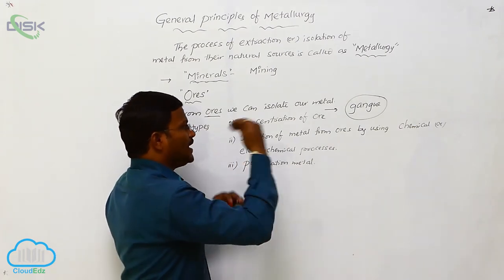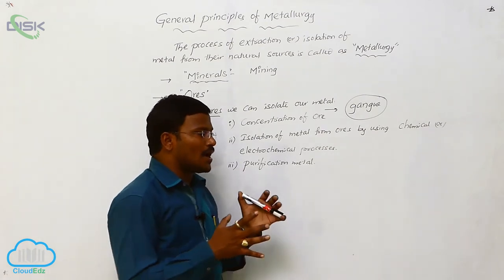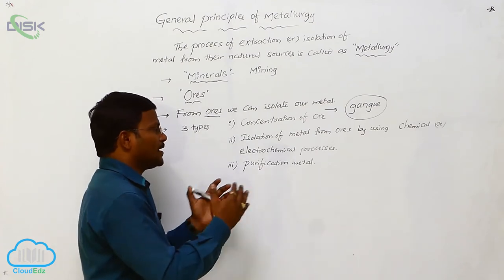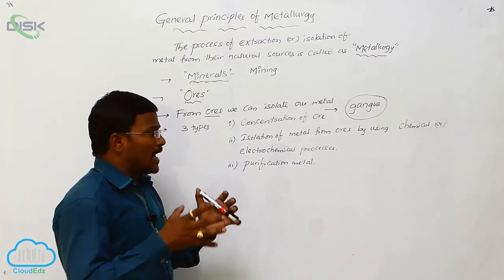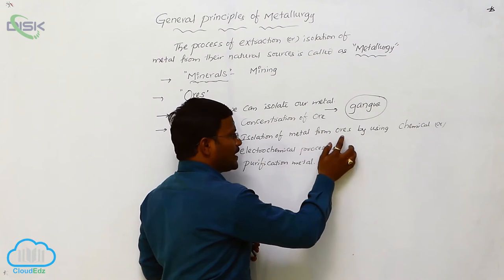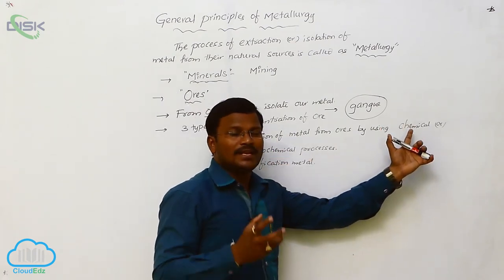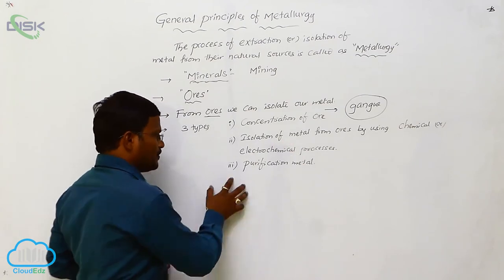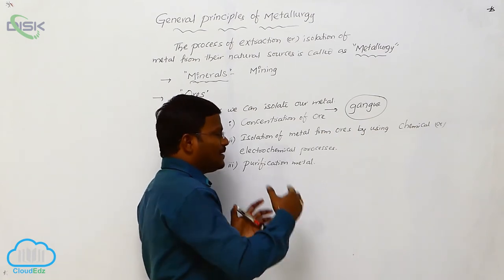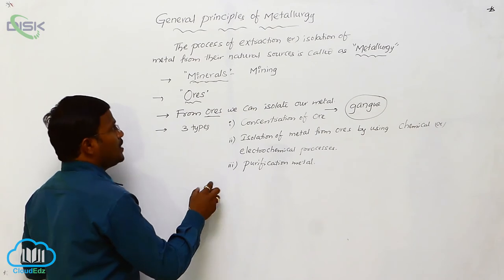The ores available from mining will have some impurities, and eliminating those impurities is called concentration of ore. This process uses different physical and chemical methods. In the second step, isolation of metal from concentrated ore takes place using various chemical or electrochemical processes. Finally, if the isolated metal has any remaining impurities, they are eliminated in the purification process. These are the three important steps in metallurgy.